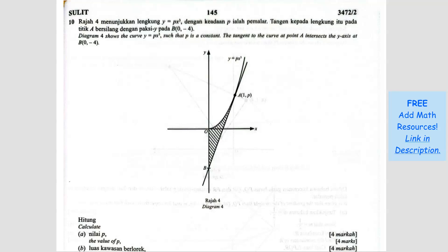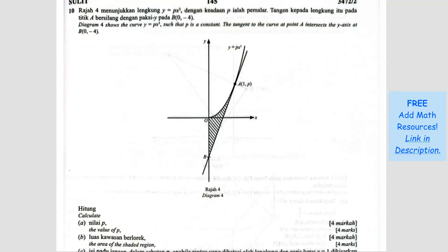Question number 10. Diagram 4 shows the curve y equals px cubed, where p is a constant. The tangent to the curve at point A intersects the y-axis at B. The coordinate of B is (0, negative 4), meaning the y-intercept is negative 4. Question A: calculate the value of p.